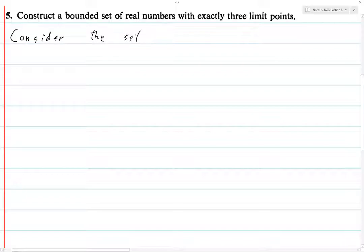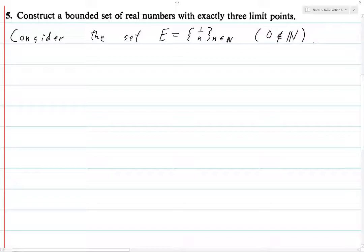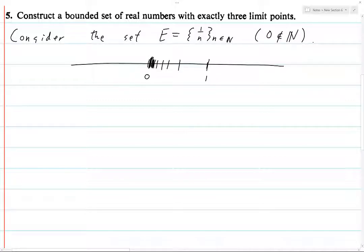Consider the set E, which is the set of rationals of the form one over n, where n is a natural number. When I say natural numbers, analysts use it such that zero is not a natural number — so the natural numbers are one, two, three, four, etc. So what does E look like? We have zero here and one here. We have one over one is one, one over two, one over three, one over four, one over five — and it just starts getting really dense close to zero. These numbers are all between zero and one, and they get really close to zero but not quite.